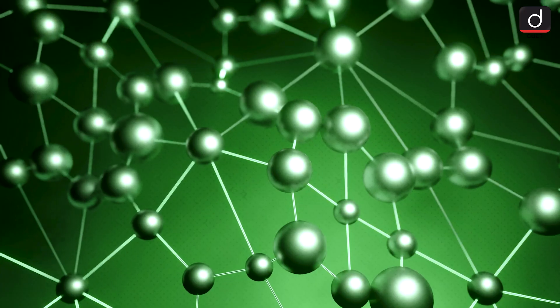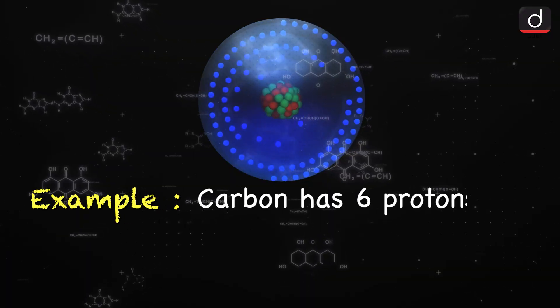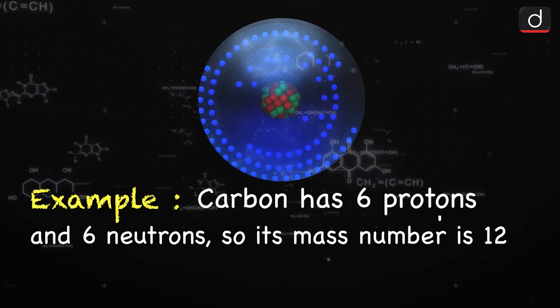2. Mass number. This is the total number of protons and neutrons in an atom. For example, carbon has 6 protons and 6 neutrons. So, its mass number is 12.